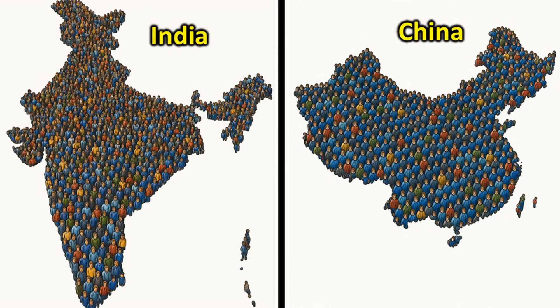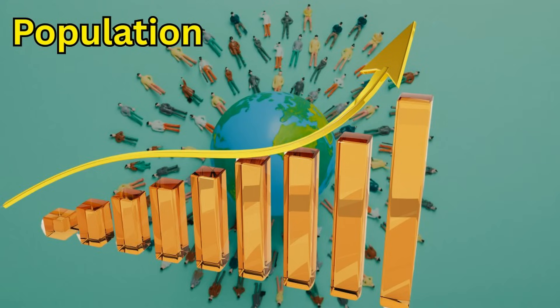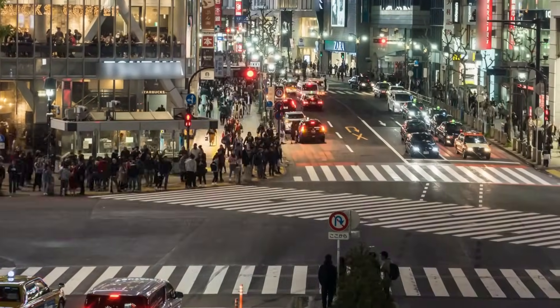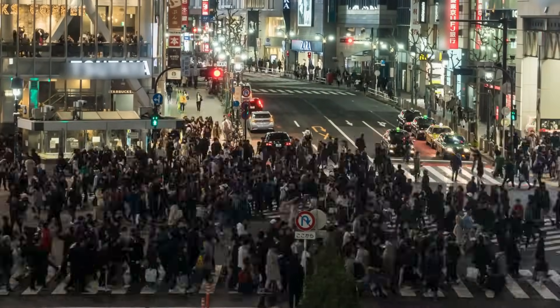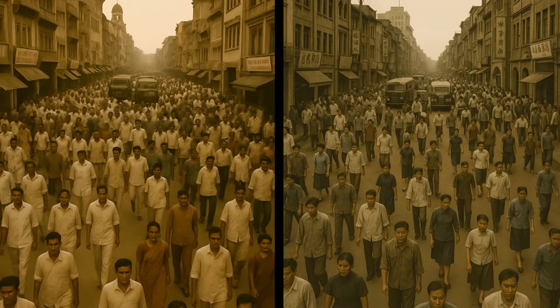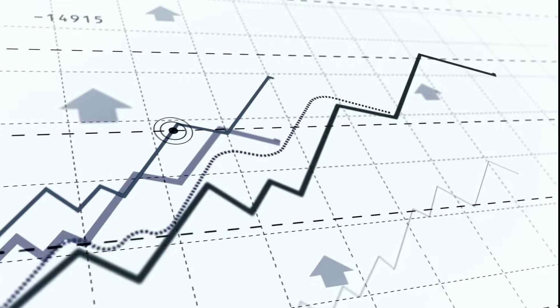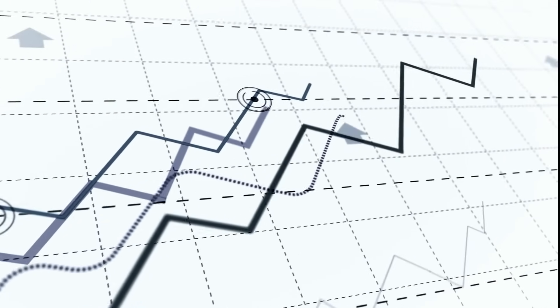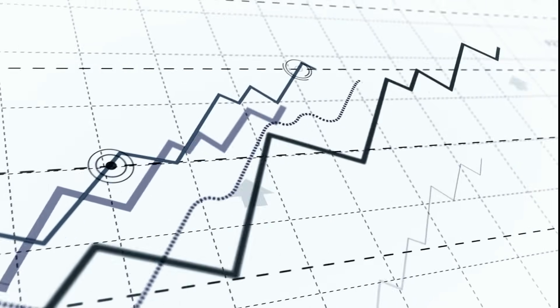Have you ever wondered why India and China have the largest populations in the world? It is not because their population growth rate during the 20th century was exceptionally high. In fact, many other regions had faster growth rates during that time. The real reason is that they already had a massive population base even before the modern population explosion began, and that base multiplied during the second half of the 20th century.